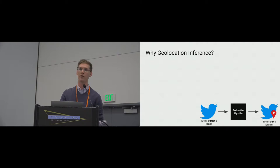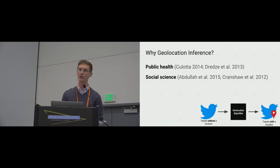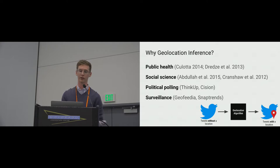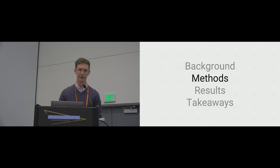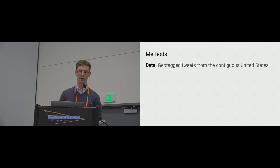Geotagged tweets, and geolocation inference algorithms to increase the number of geotagged tweets, have been used in a wide variety of applications. On the research side, this includes public health — tracking and prediction of disease or health factors — computational social science, studies on things like the happiness or mobility of different groups of people, political polling, and even, unfortunately, surveillance of protesters and dissidents. The effectiveness of geolocation algorithms can have far-reaching impacts, both potentially beneficial and invasive.